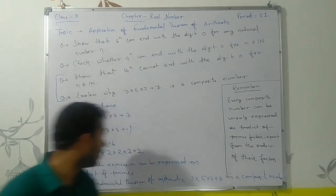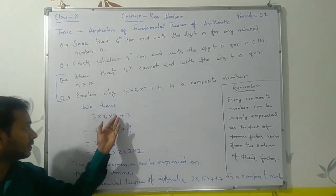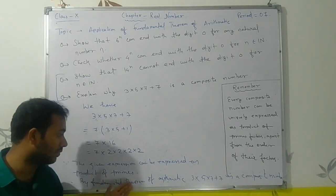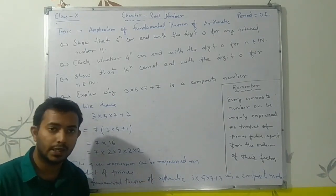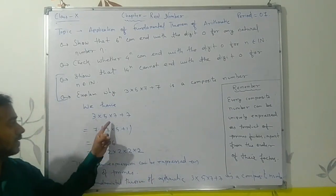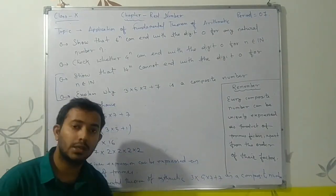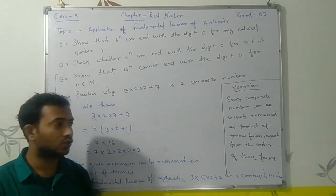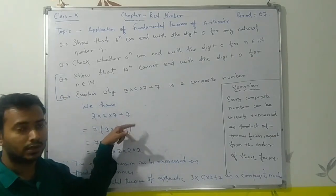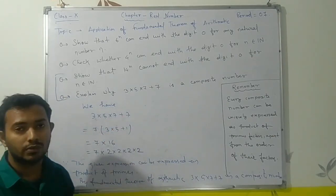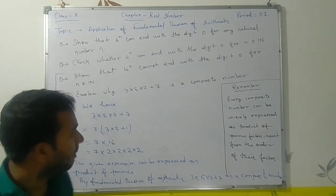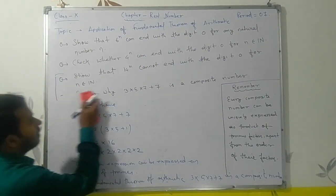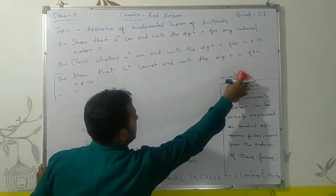To show that a number is composite, you need to express it as a product of prime numbers. Here we have expressed this expression as a product of primes, so we can say by the Fundamental Theorem of Arithmetic that the given expression is a composite number. Now let's look at the next problem.